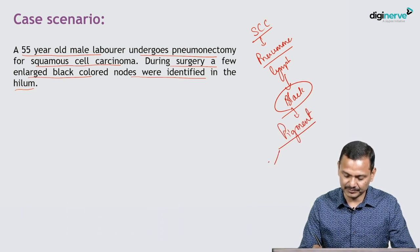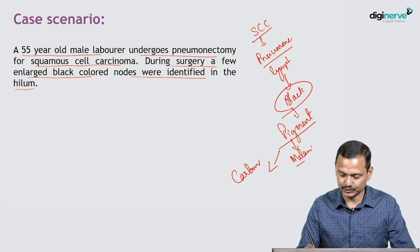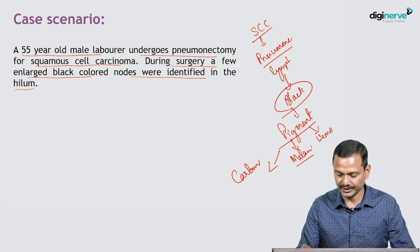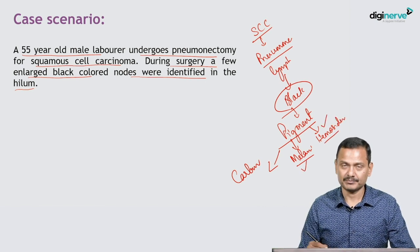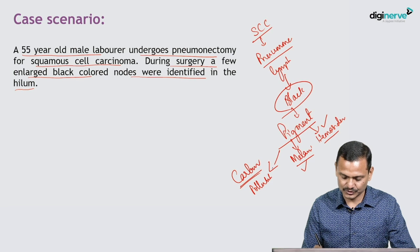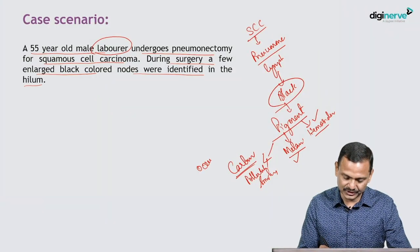What could be the pigment? The pigment could be carbon, which is most common. It can be melanin coming from a melanoma, or it could be hemosiderin coming from some hemorrhage. So hemosiderin from hemorrhage, melanin from some melanoma or tumor, and carbon from pollutants or from smoking. It could also be occupational, as the patient in this case is a laborer.